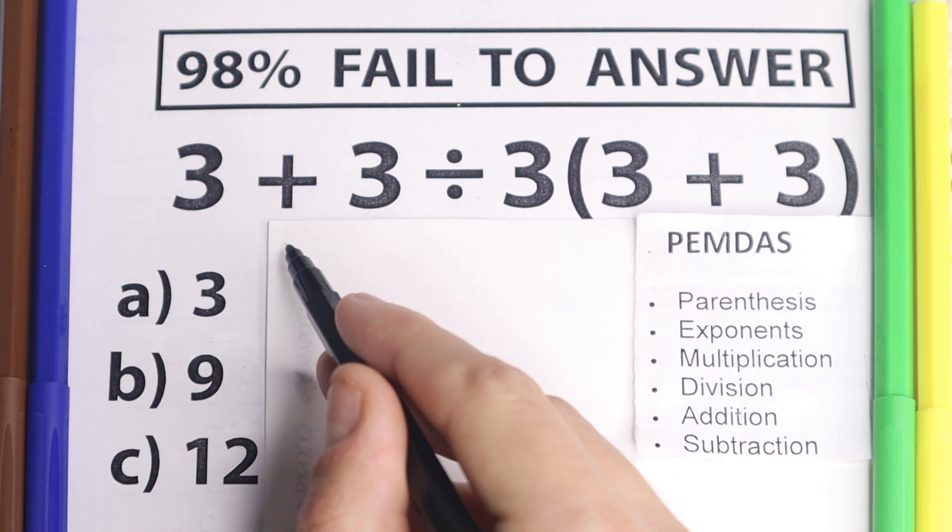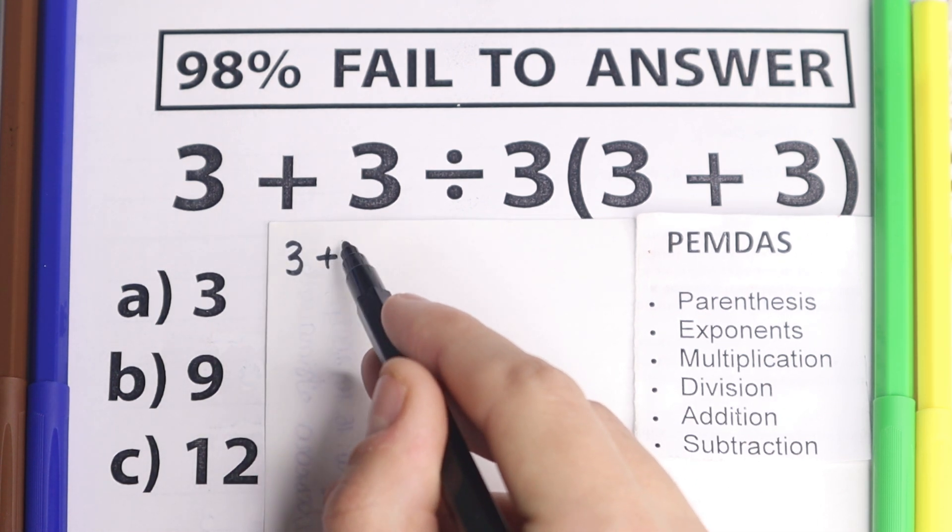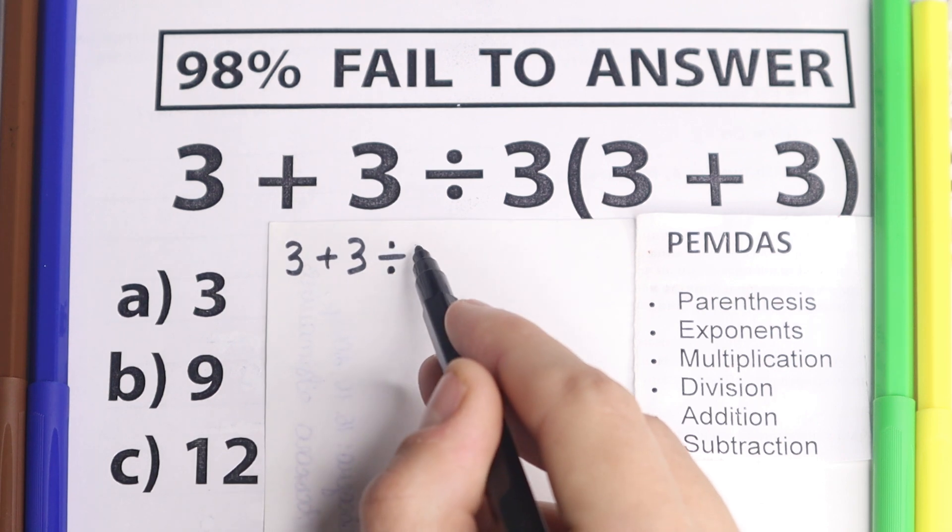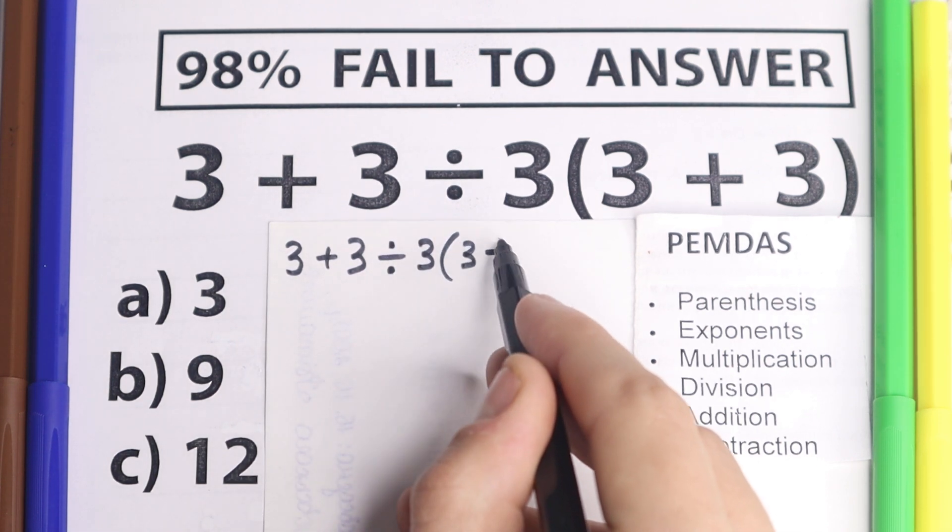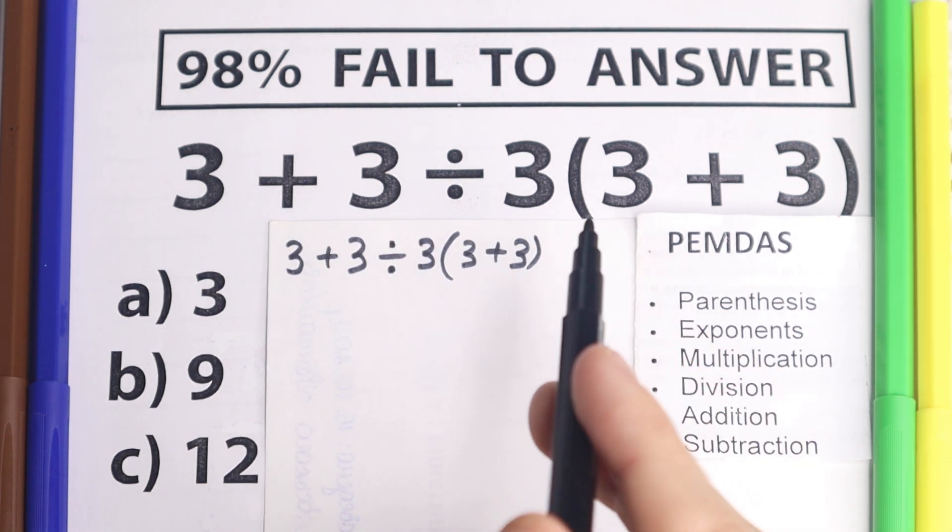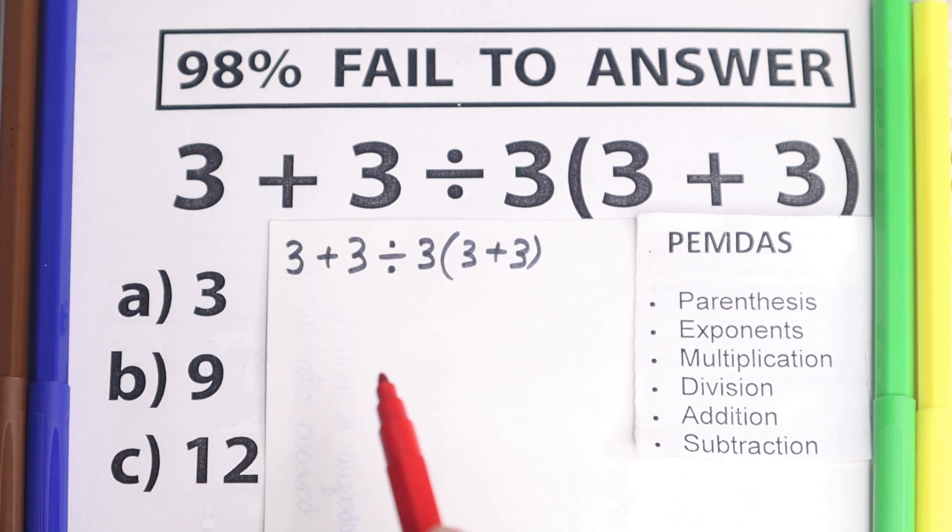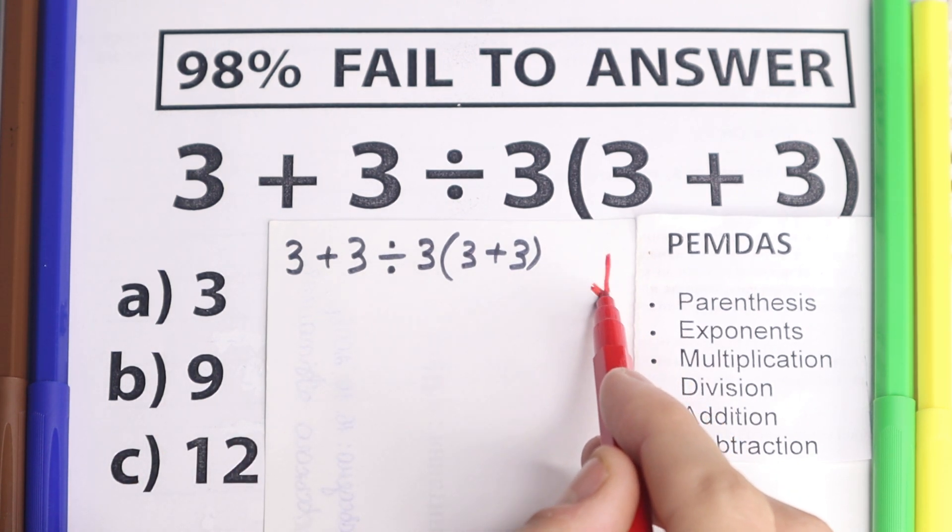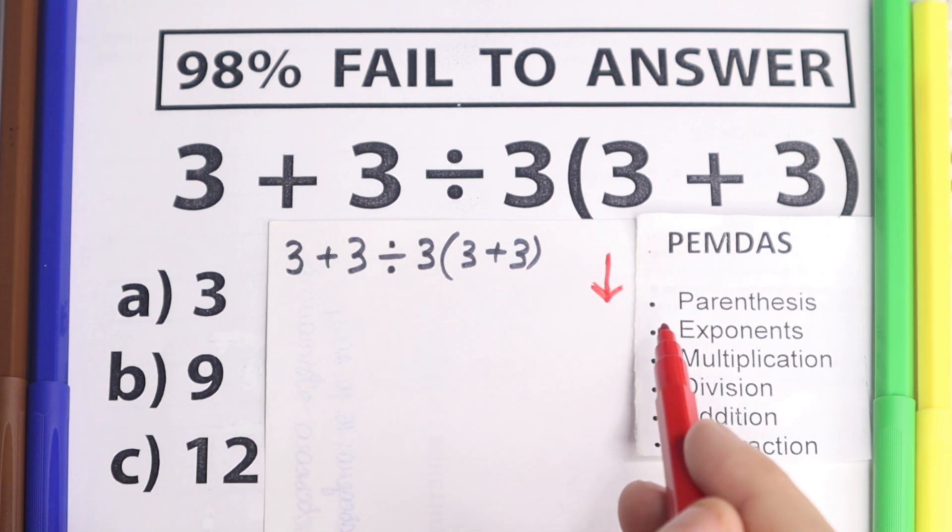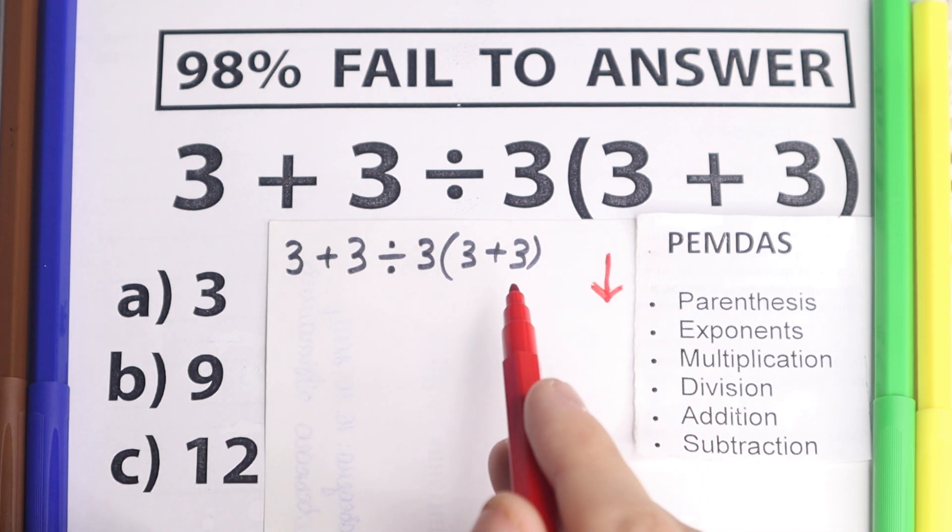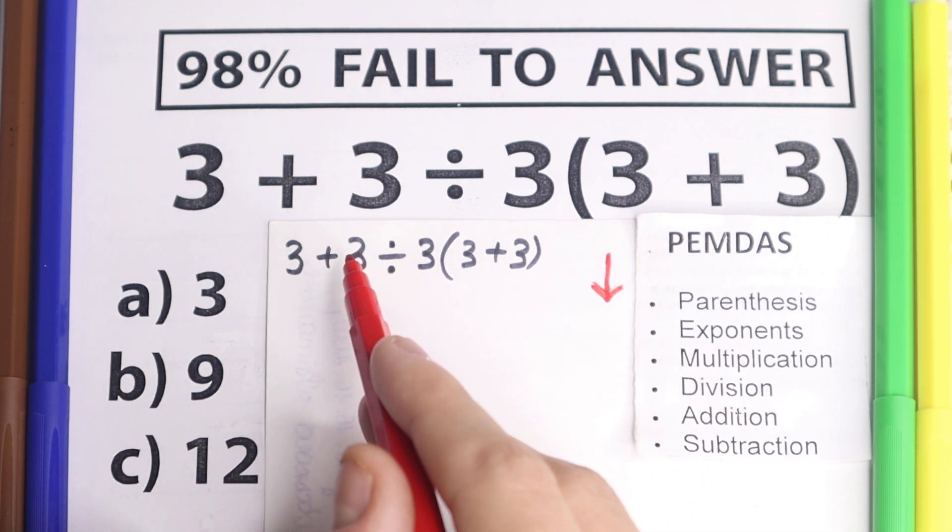So first of all, I just read this problem right here real quick, so 3 plus 3 we have divided by 3 and in parentheses 3 plus 3. And let's go back about this PEMDAS order of operation because one really interesting moment, this order of operation works from the top to the bottom in my case because we need to start from parentheses, this is our first step according to PEMDAS.